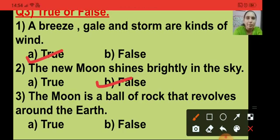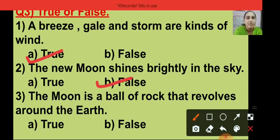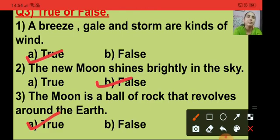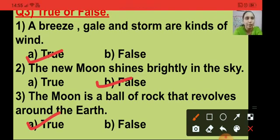Question number 3: the moon is a ball of rock that revolves around the earth. This statement is true, so I am putting a tick on option A, that is the true option. The moon is a ball of rock that revolves around the earth.